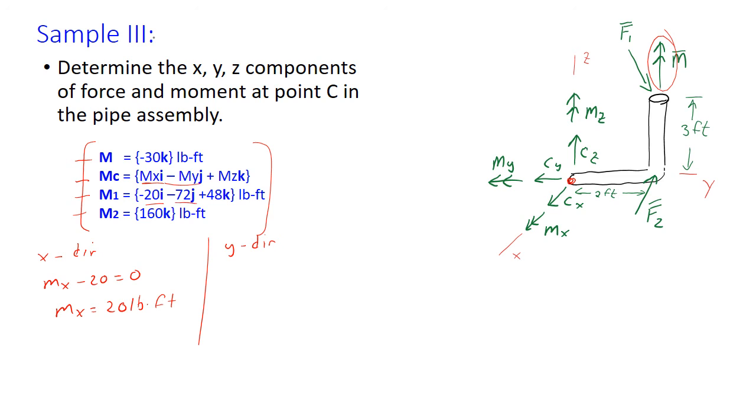The y direction. In the y direction what do we have? We have our j, so we have minus My minus 72. Sum of those equals 0, so My is equal to negative 72 pound-feet.